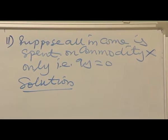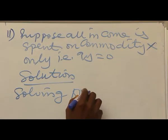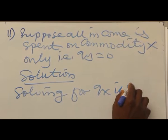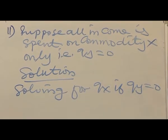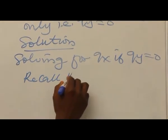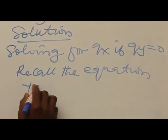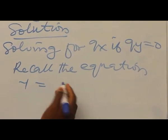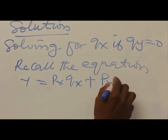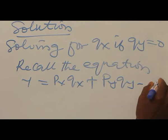Solution: solving for QX if QY equals zero. Now recall the equation — Y equals PXQX plus PYQY. That one would be equation 1.